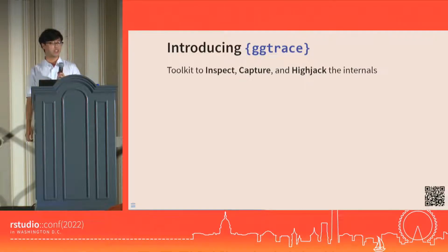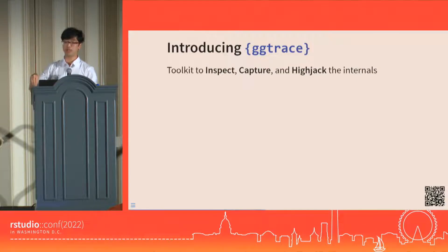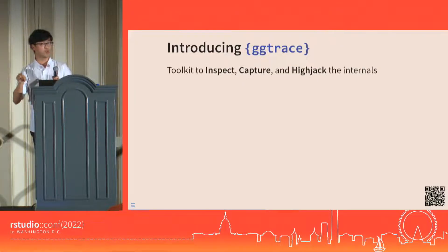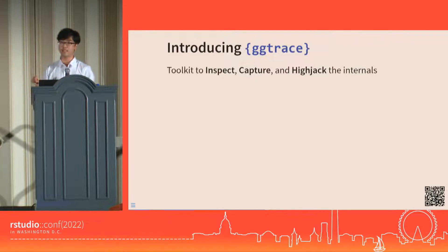ggtrace is a package that allows us, the users, to drop inside, like parachute down this internal pipeline at any point we want, and intercept the data at that step, and interact with it using the kind of data wrangling tools that we're already familiar with.